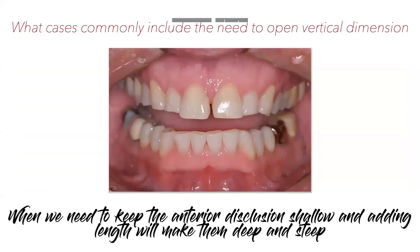Another type of patient is those where we need to keep anterior disclusion shallow, because if we add incisal length, we will make them deep and steep — I call that cow trapping. Looking at a patient with a lot of wear into dentin and flattened maxillary and mandibular anterior teeth — these are people that like to go out horizontally. If you get them into a deep, steep anterior overjet-overbite relationship, you're trapping them. People that like to go horizontally need it to be as easy as possible to get off their back teeth.